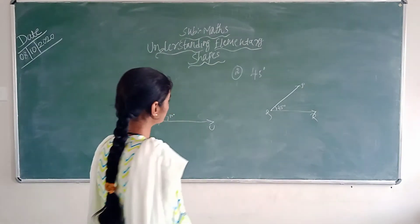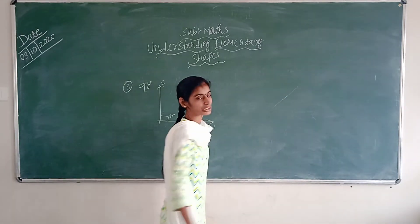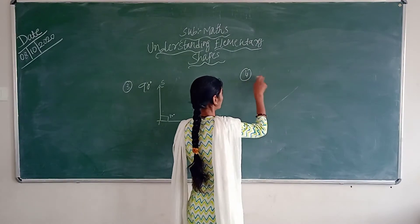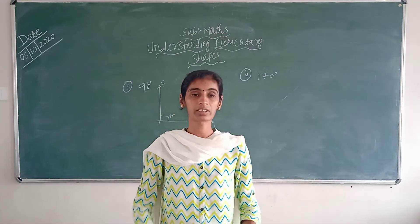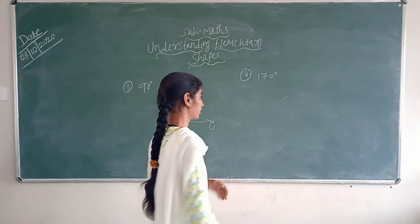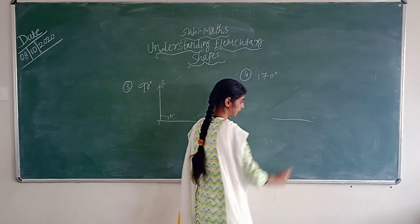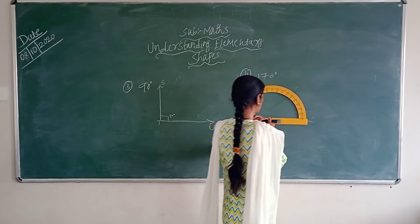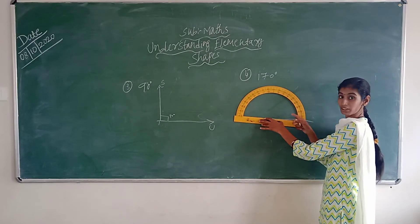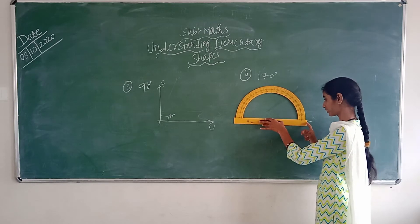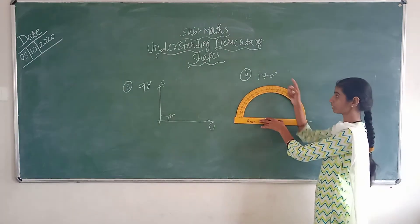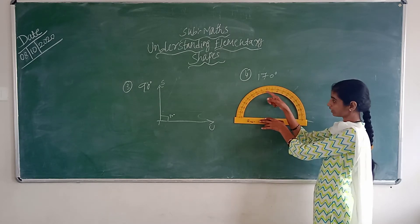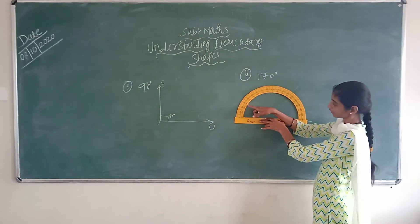Then next, consider the obtuse angle. You all know the obtuse angle measures greater than 90 degrees but less than 180 degrees. So now let's take 170 degrees — 170 degrees is which angle? Yes, it is an obtuse angle. Again for this, you have to take one line segment. Second step: you have to place the protractor on this neatly, so both lines should match. You have to see the downside numbers — it is 0, 10, 20, 30, 40, 50, 60, 70, 80, 90, then 100, 110, 130, 140, 150, 160, 170.